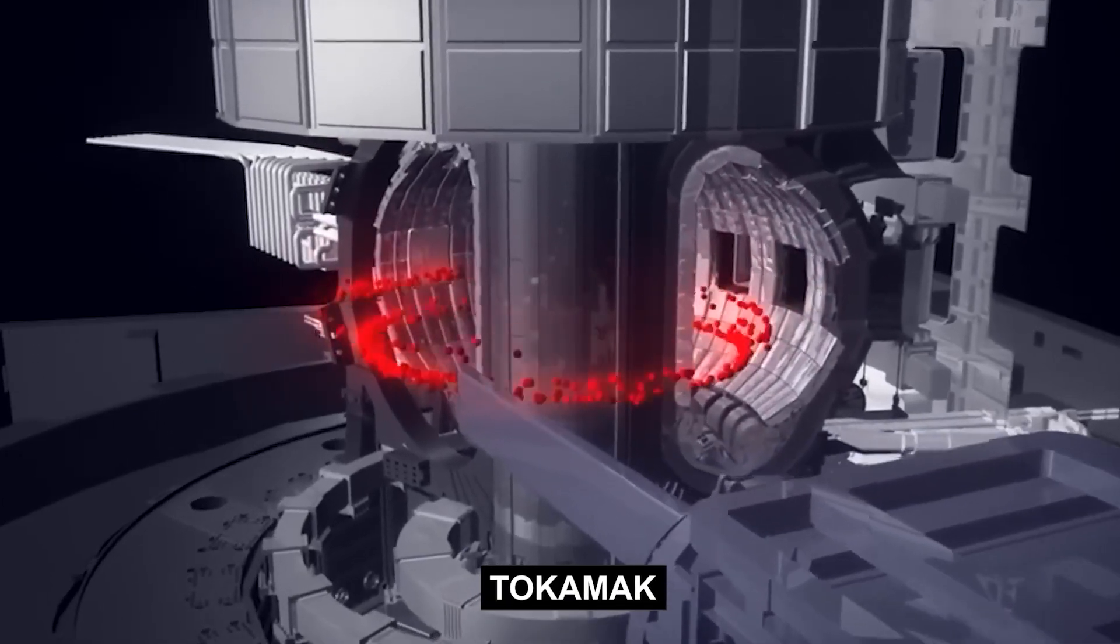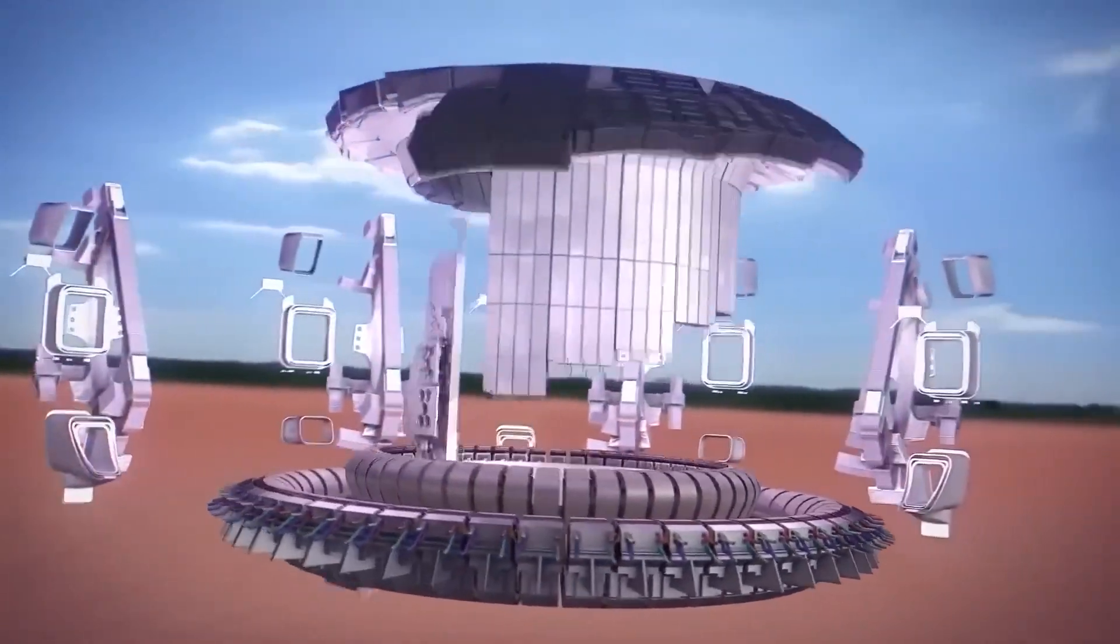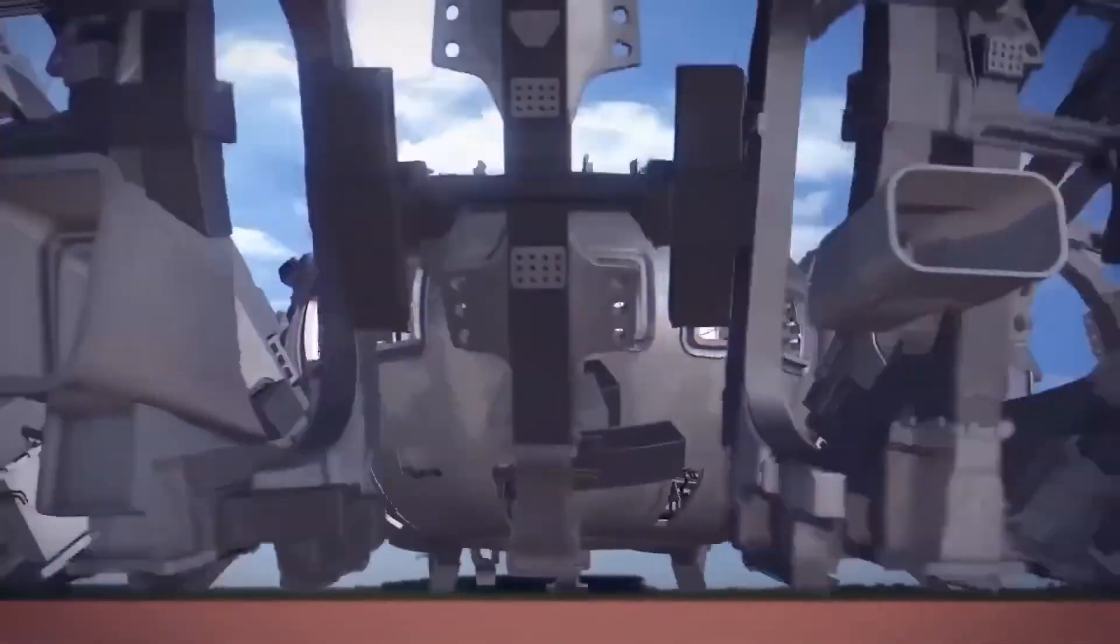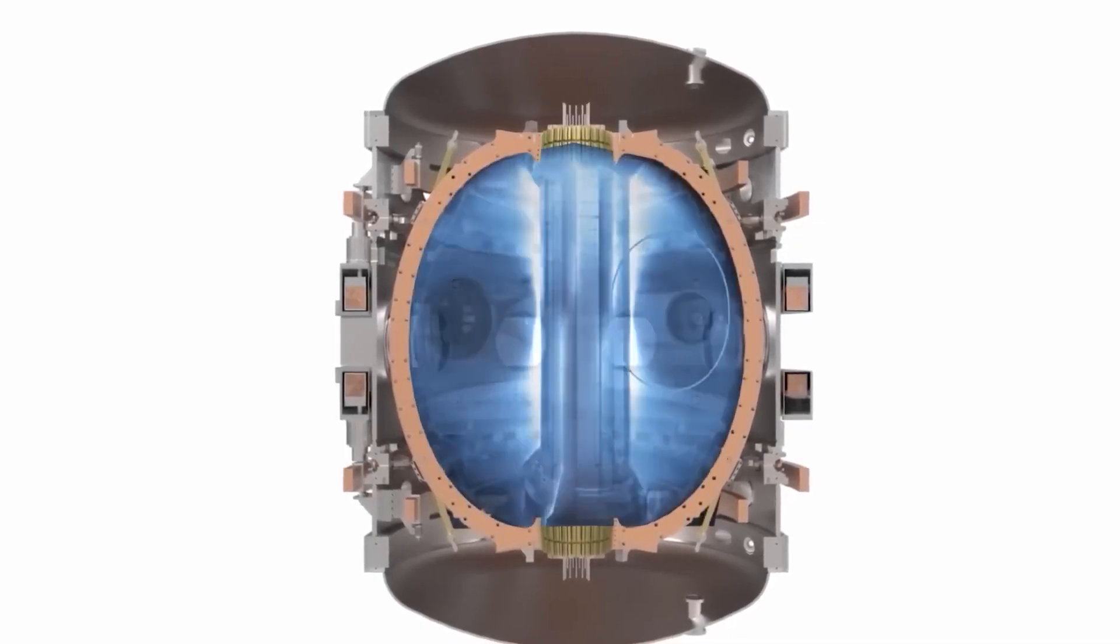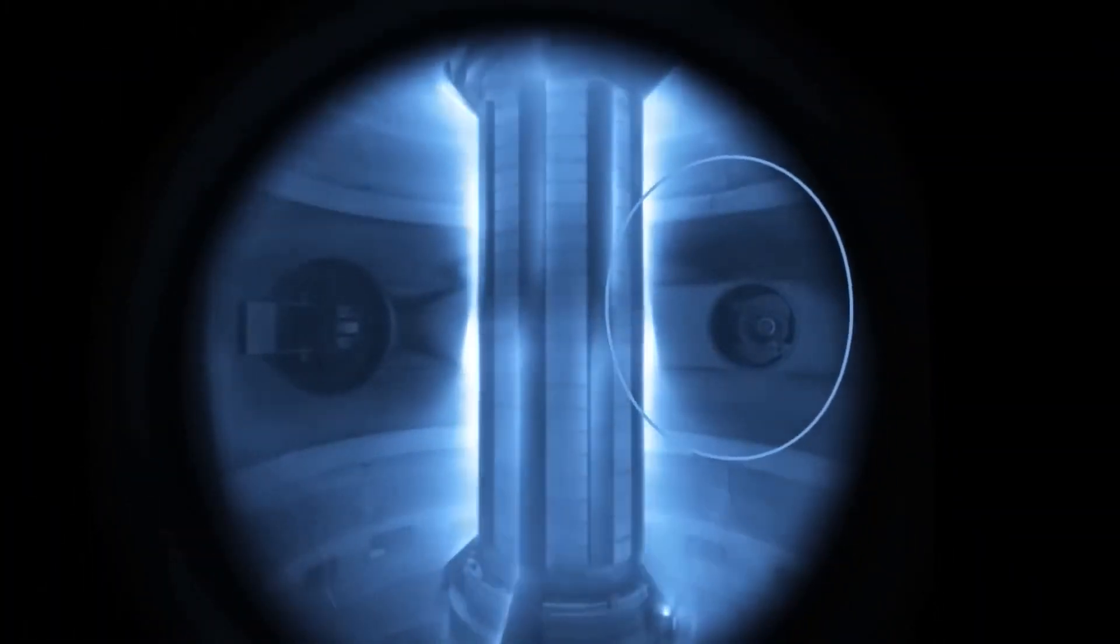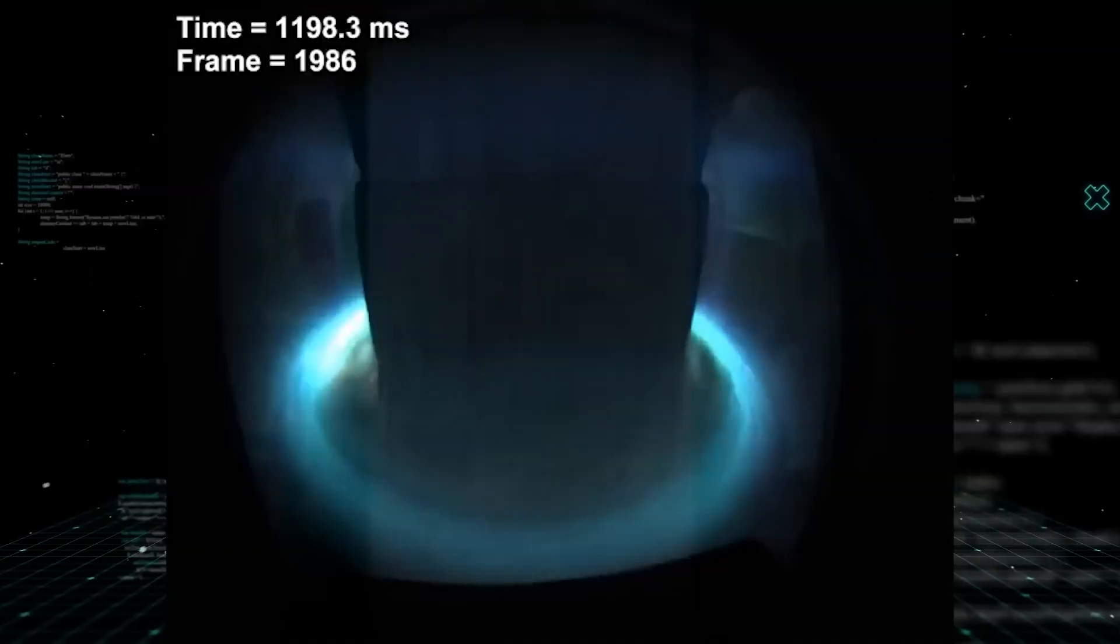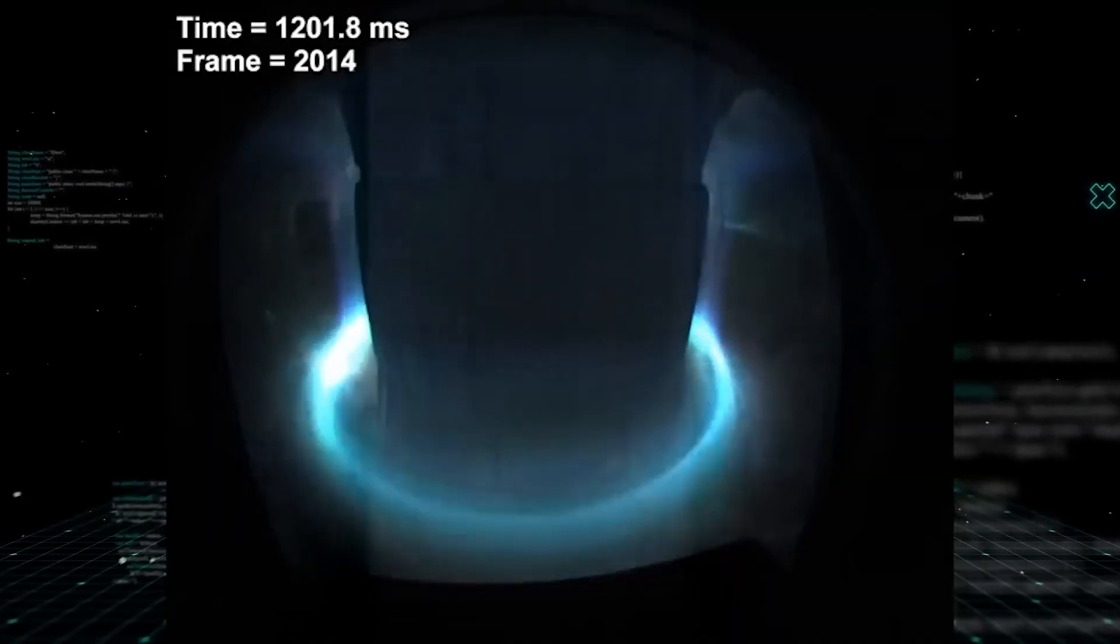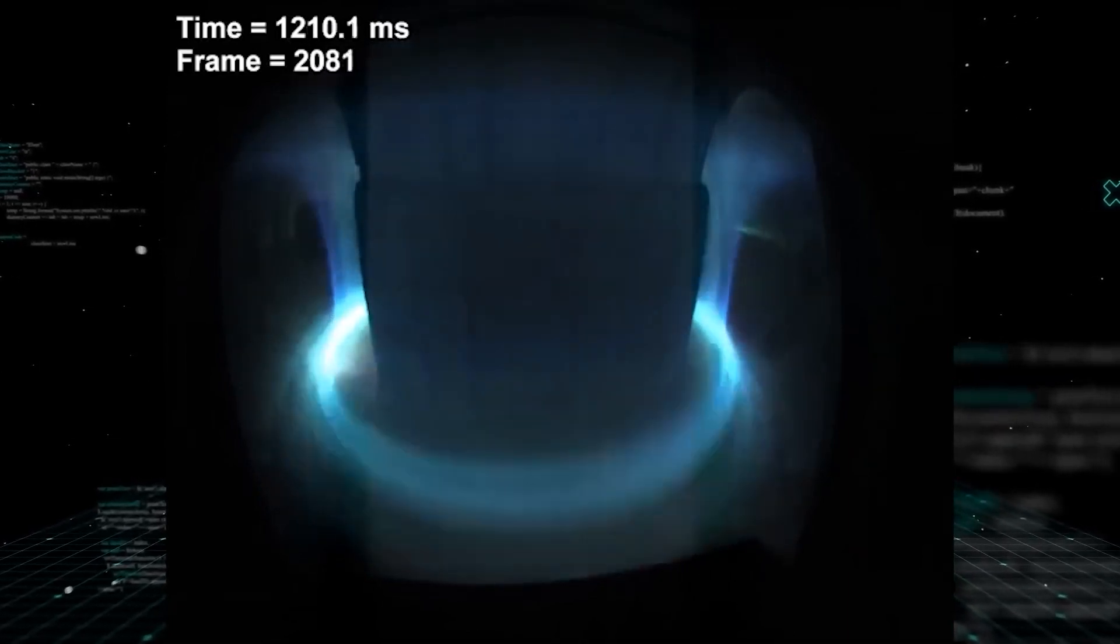At the core of a Tokamak lies a vacuum chamber in the shape of a donut. Within the confined area, the gaseous hydrogen fuel experiences significant levels of heat and pressure, leading to its conversion into plasma, an electrically charged gas with elevated temperatures. By employing sizable magnetic coils positioned around the chamber, scientists can manipulate the charged particles within the plasma. This control mechanism is crucial to prevent the plasma from coming into contact with the walls of the chamber.